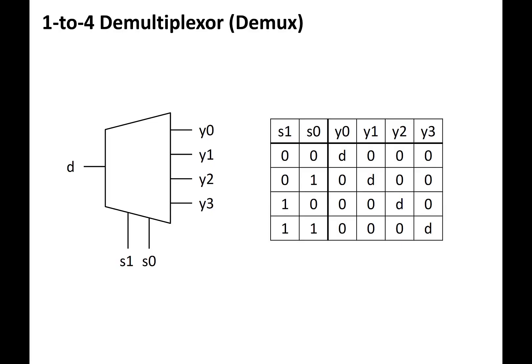A 1-to-4 demultiplexer is a lot like a decoder, except it also has a data input, so that the data input D is routed to one of the four outputs, Y0 through Y3, depending upon the value of the two select lines. For example, if S1 and S0 are 1 and 0 respectively, then Y2 will get the value of D, while the other outputs all get a value of 0.